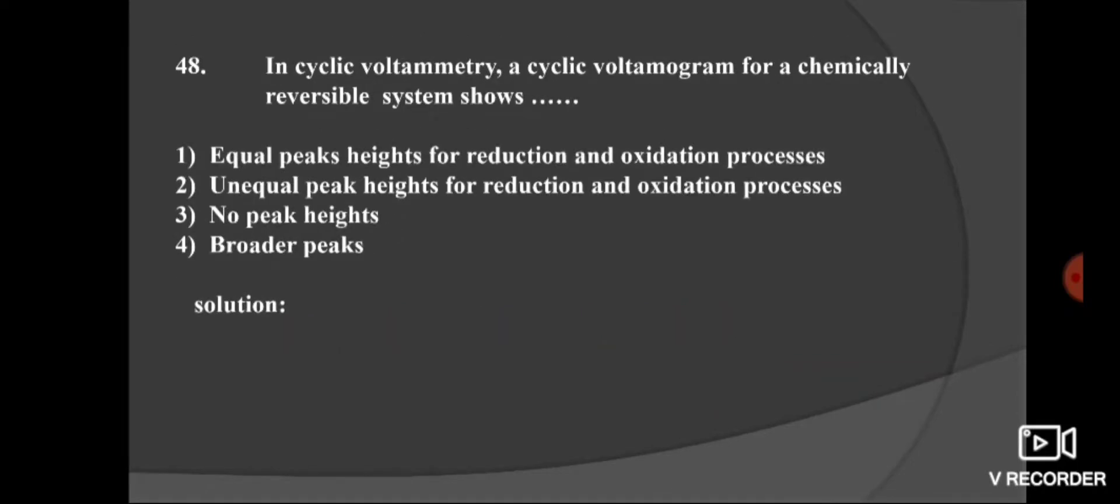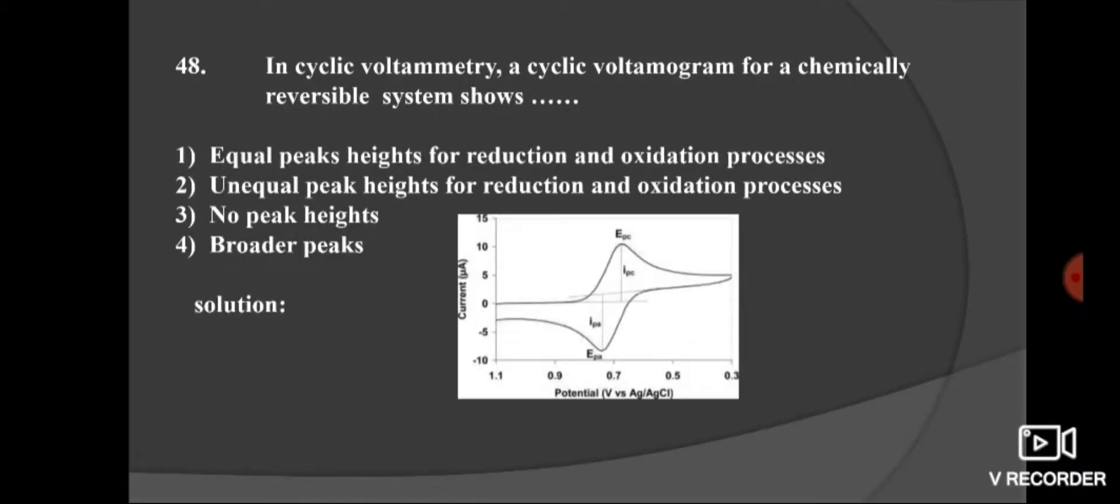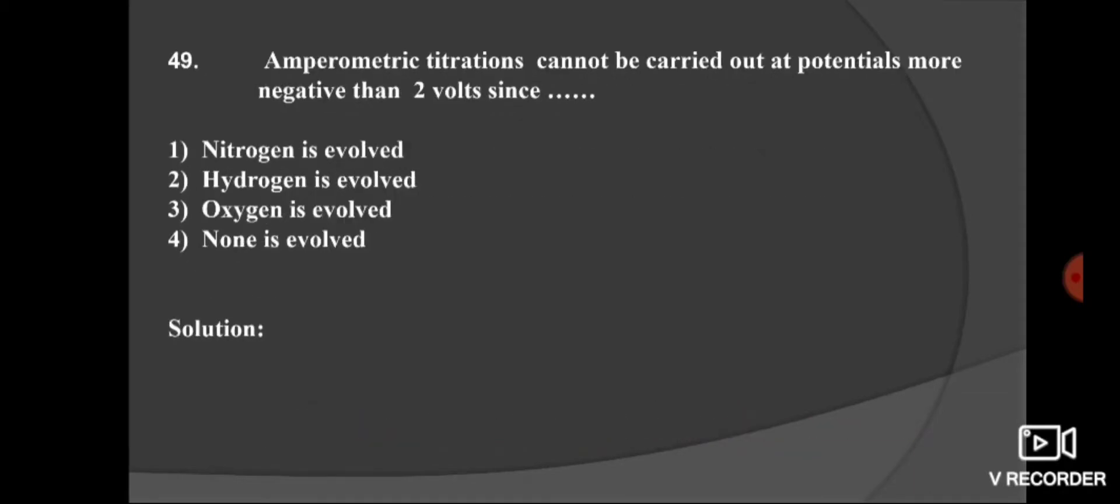Next question. In cyclic voltammetry, a cyclic voltammogram for a chemically reversible system shows: option 1, equal peak height for reduction and oxidation processes; option second, unequal peak height for reduction and oxidation processes; third, no peak height; and fourth, broader peaks. If we see the cyclic voltammogram, it is observed that it shows equal peaks height for reduction and oxidation processes. Option 1 is the right option.